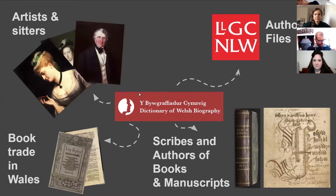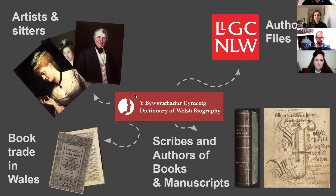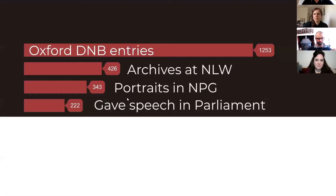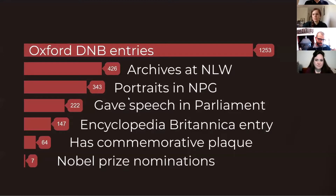The structured nature of the linked data means that we can also begin to make connections between our collections. We've shared data for artists, artworks, manuscripts, and lots of authority file data to Wikidata. We've done a lot of work around the book trade in Wales — publishers and printers — and established that a lot of the people involved in those collections also appear in the Dictionary of Welsh Biography. It's not just connections within our collections: through the use of identifiers on Wikidata, we've established that over a thousand people in the Dictionary of Welsh Biography also have an Oxford DNB entry, 400 have archives at the National Library, and 343 have portraits in the National Portrait Gallery. Wikidata gives us those pathways and connections between these collections.